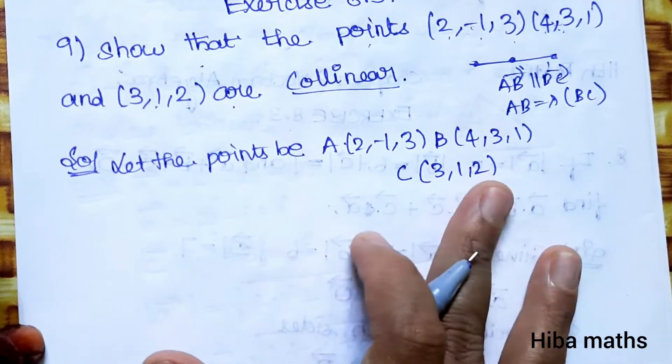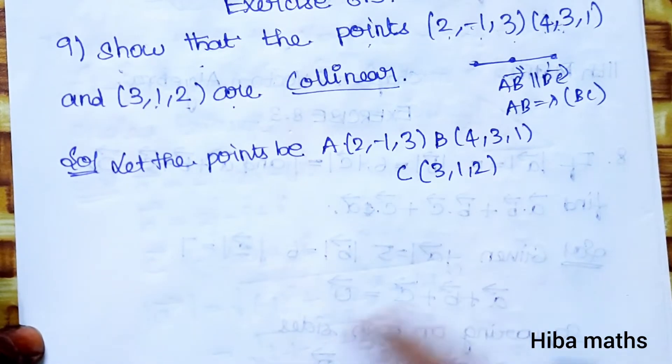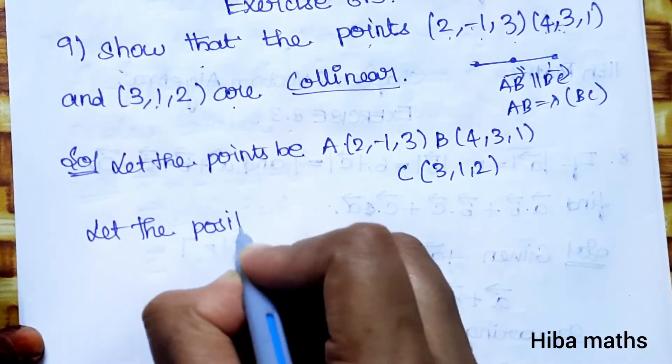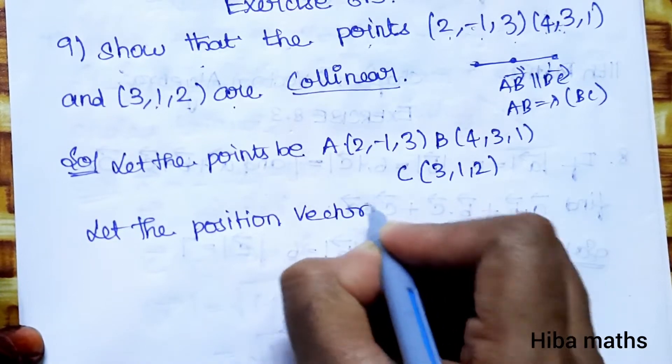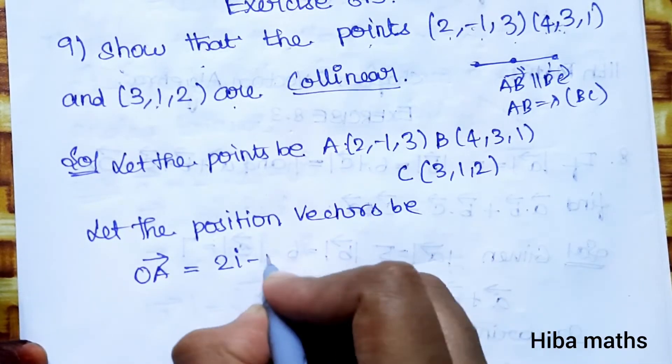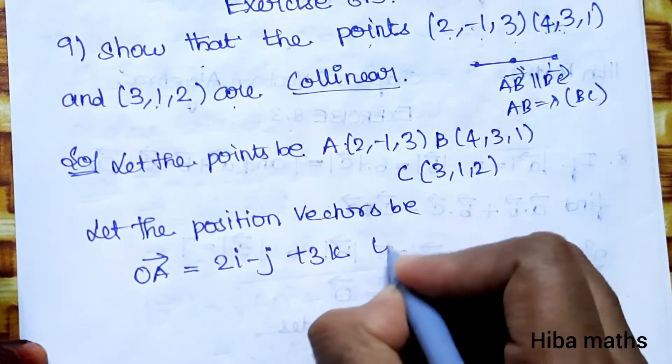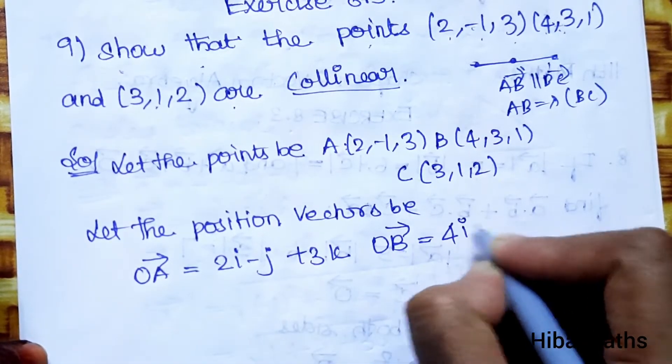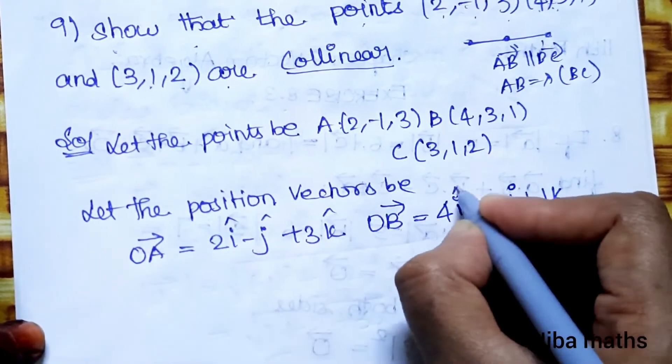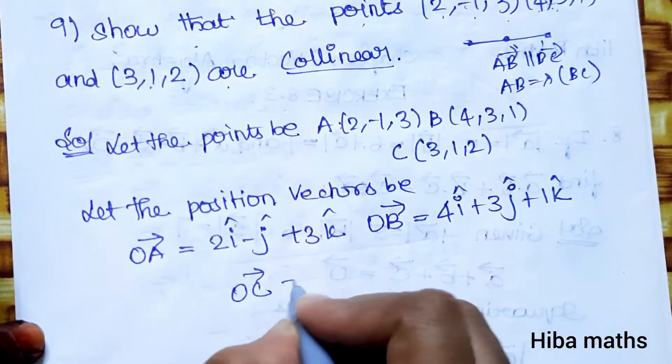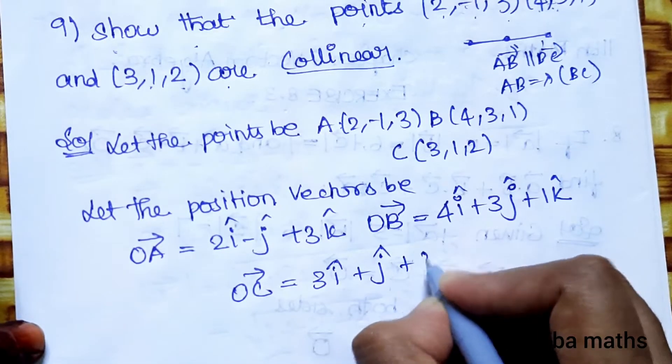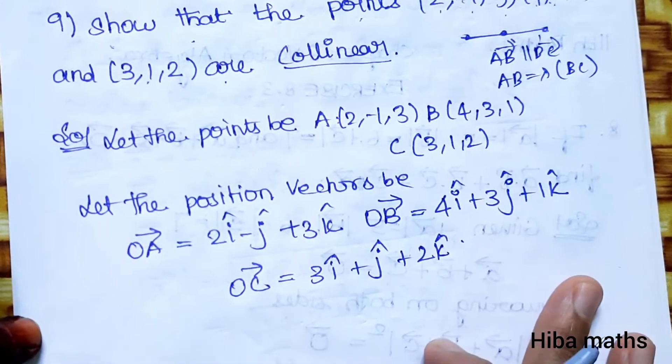Let the position vectors be: OA vector = 2i - j + 3k, OB vector = 4i + 3j + k, and OC vector = 3i + j + 2k.